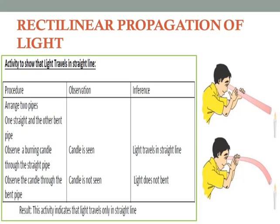The most prominent and important property of light is rectilinear propagation of light. Activity to show that light travels in a straight line. Arrange two pipes — one straight and the other bent. Observe a burning candle through the straight pipe. What do you observe? The candle is seen. What do you infer? Light travels in a straight line. In the second case, observe the candle through the bent pipe. What do you observe? The candle is not seen. What do you infer? Light does not bend. So the result of this activity indicates that light travels only in a straight line.